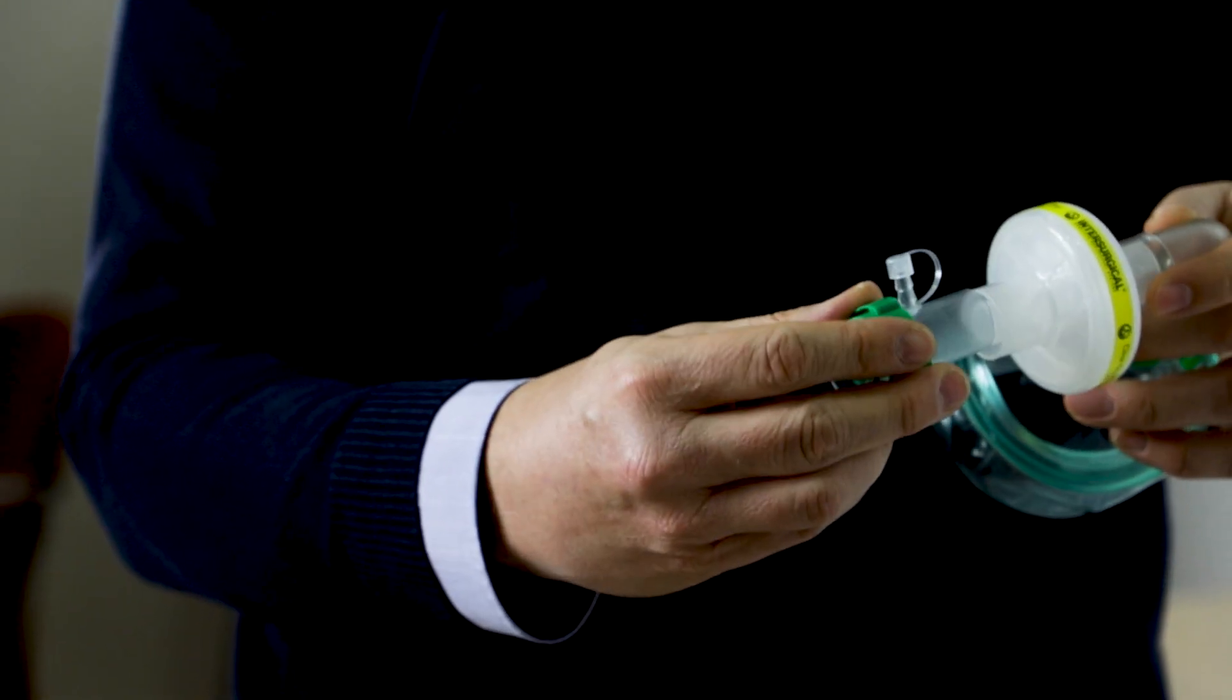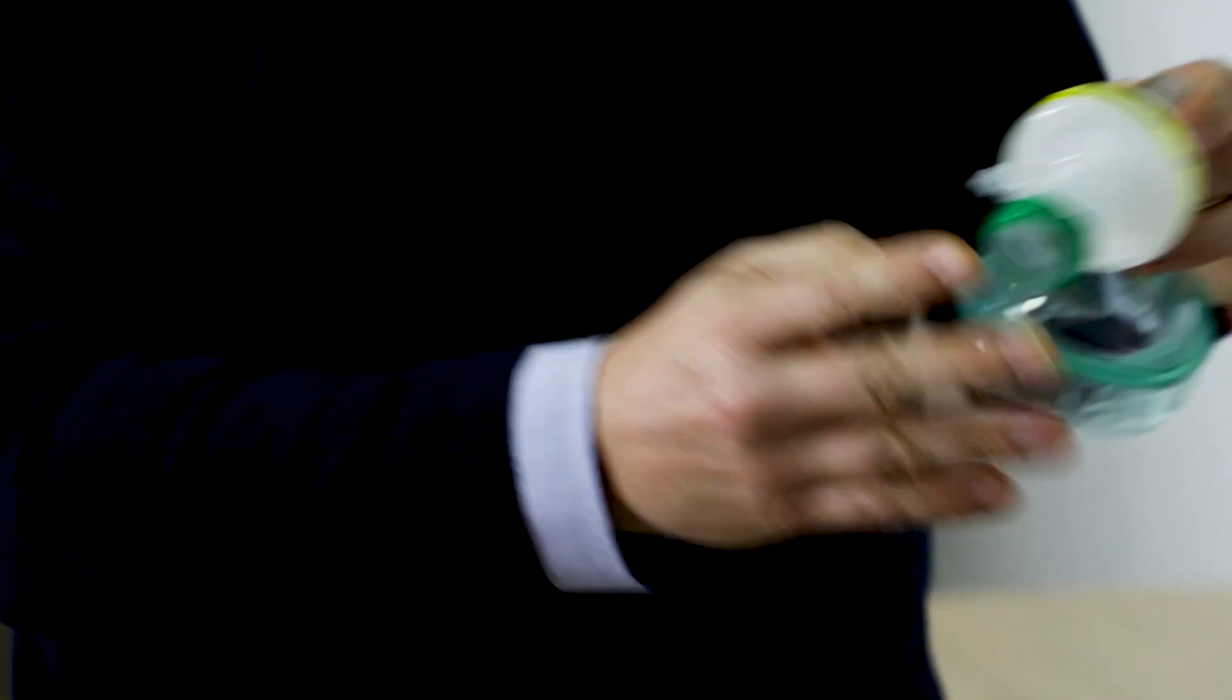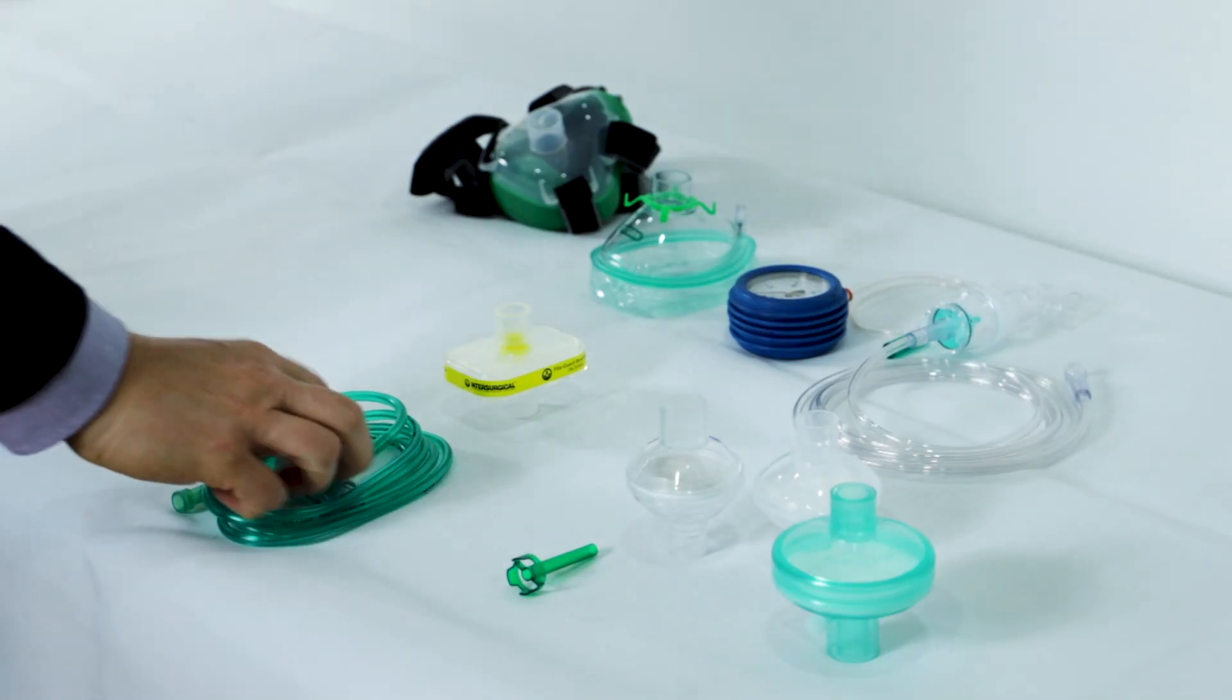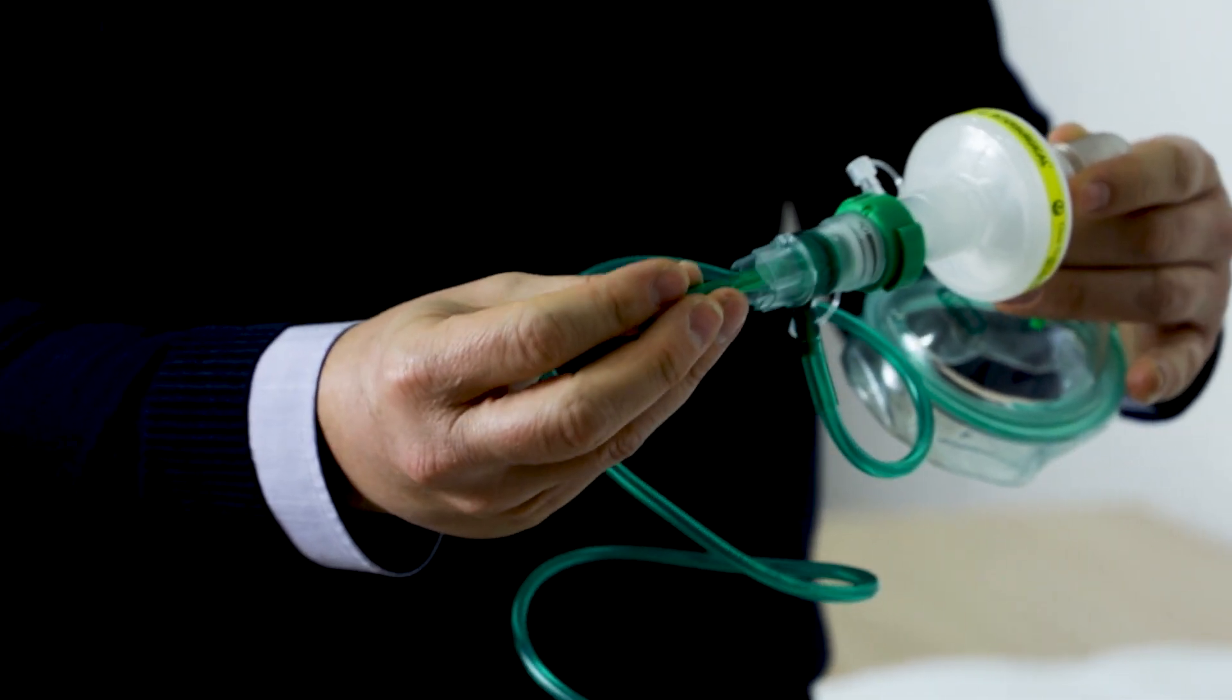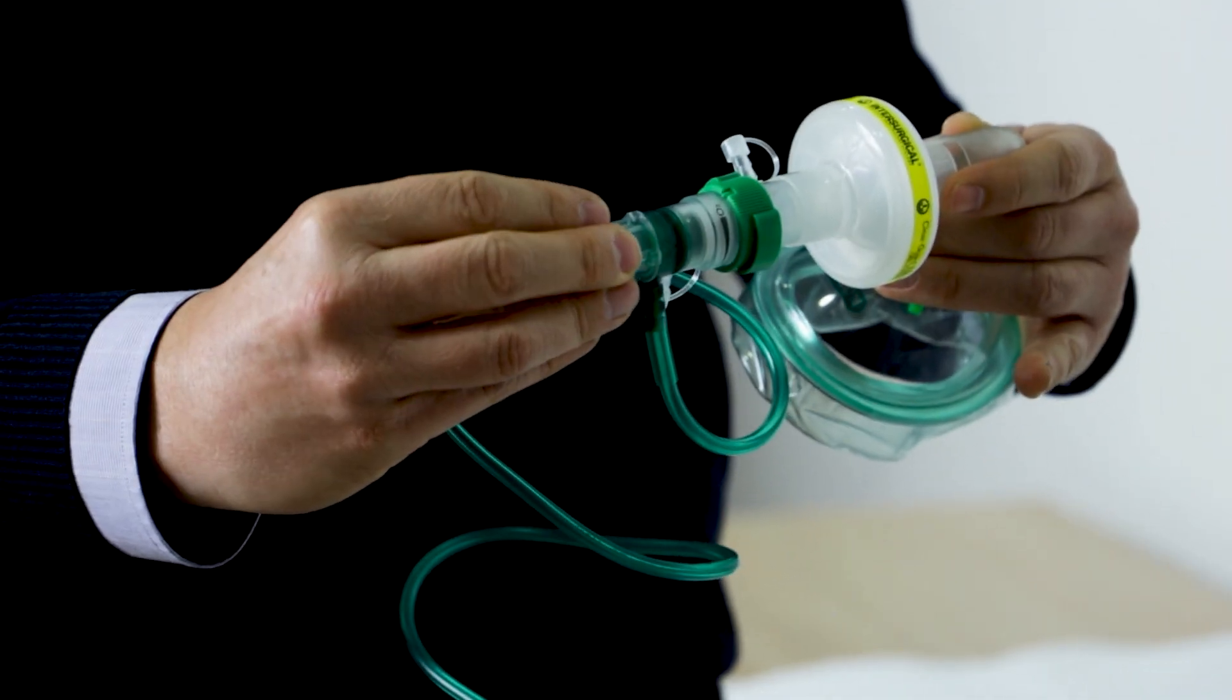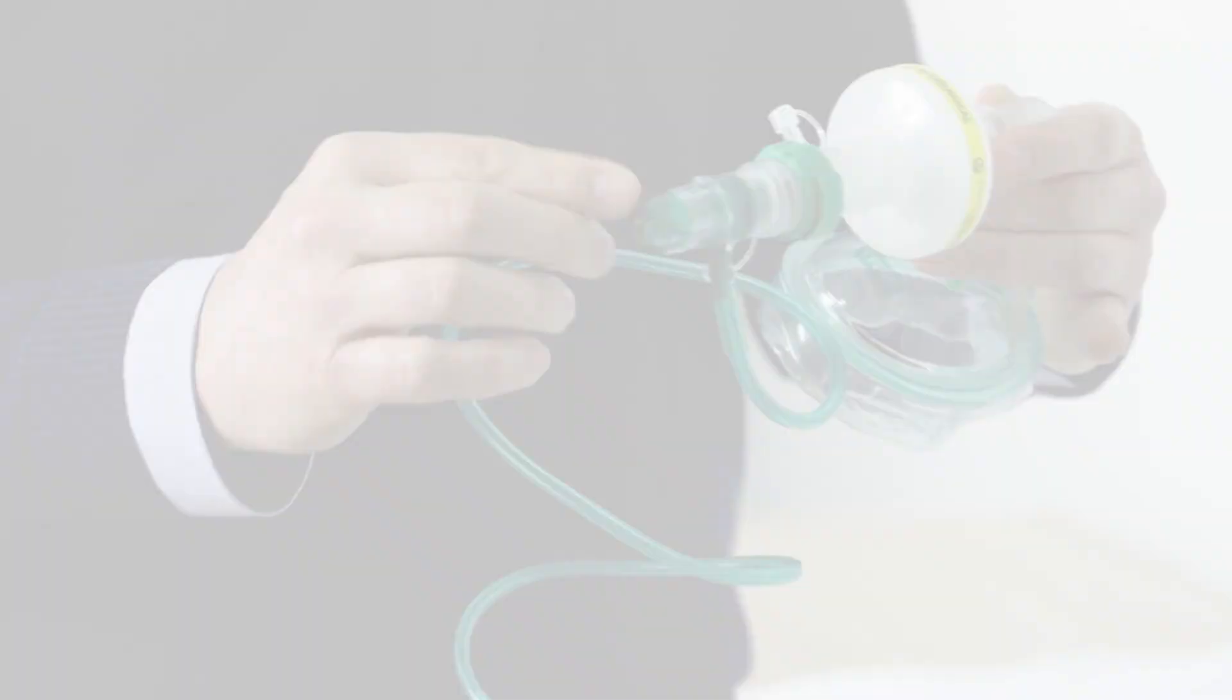After fitting the filter, we need to connect the FiO2 ring like this. And finally, we need to connect the Boussignac valve with the noise reductor to reduce the noise and to decrease the turbulent flow.